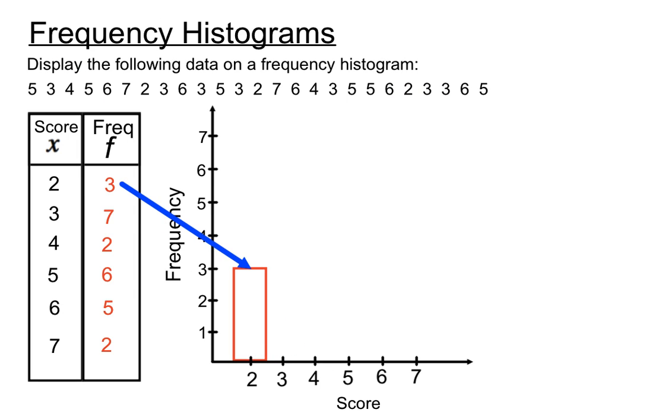Now the next frequency is the score of 3 occurs 7 times, so it needs a column that goes from the score of 3 and indicates that the frequency for that is 7. And I'm sure we'll get the hang of this.